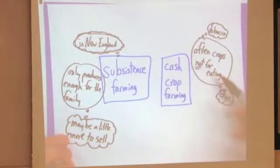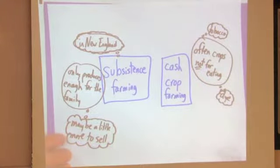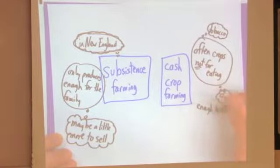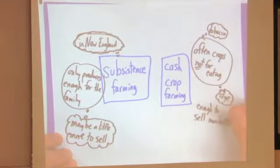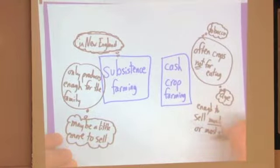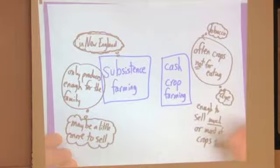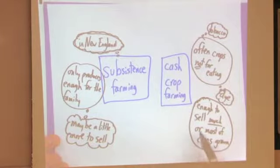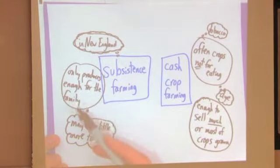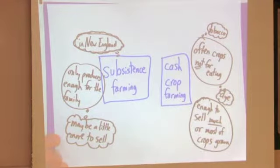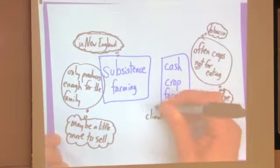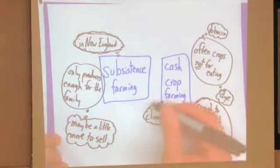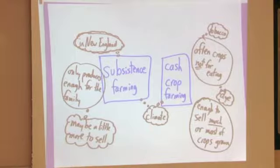So cash crop farming, again, for one thing, it's often crops not for eating. Also cash crop farming is producing enough to be able to sell much, or maybe even most, of the crops that are grown. So the point of this kind of farming is really about growing things to be able to sell. Subsistence farming is just producing enough for the family. And really it tends to depend on the kind of climate for where the person's living. Some places produce enough for cash crops, especially the farther south usually that you go. And the farther north you go, it's usually more subsistence farming, just barely able to produce enough with the kind of growing seasons that you have.